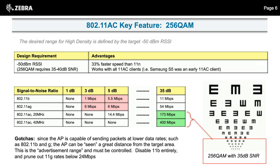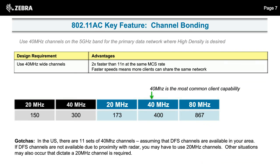Shrinking the cell is a key factor in getting more clients on the network. We've had great success doing this in classrooms. Everything in education today is online-based learning — instructional units and training tools are all available online for teachers and students. We need an access point in every room, configured to properly control the size of that advertisement cell.